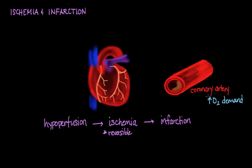Now if this same coronary artery were to become almost or completely blocked - say there is further atherosclerosis buildup and then you have formation of a thrombus, or a blood clot - then in only a matter of minutes, the tissue that this artery perfuses will become infarcted and die.